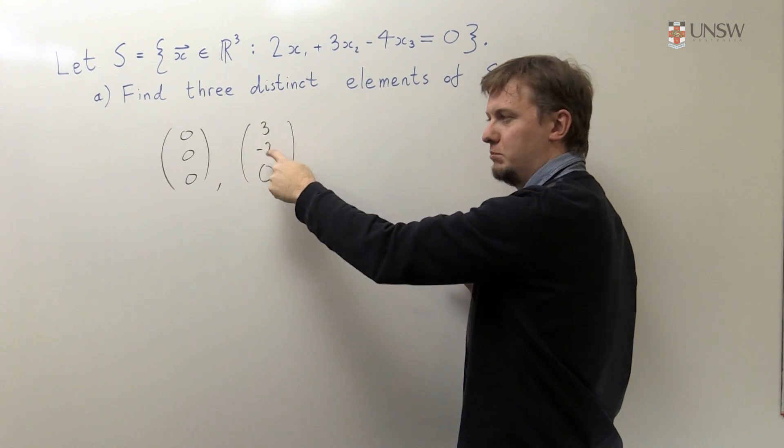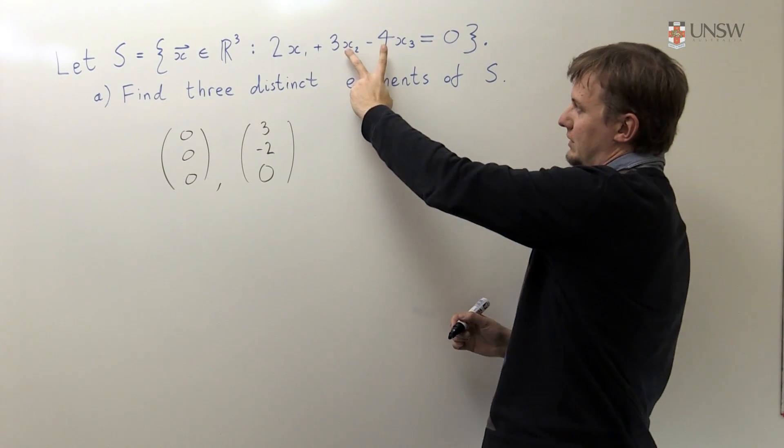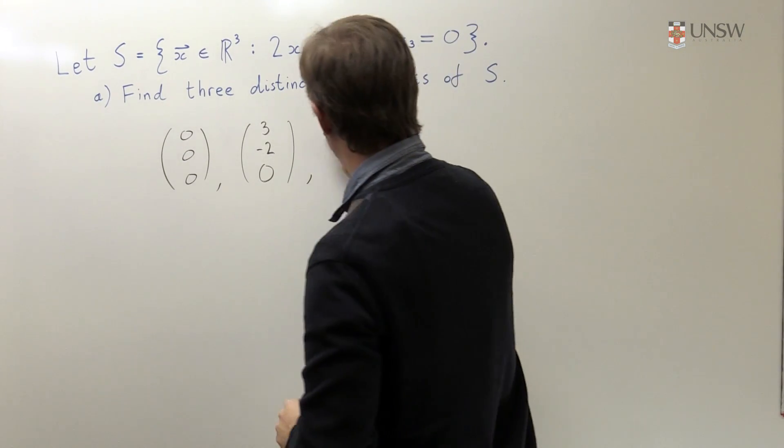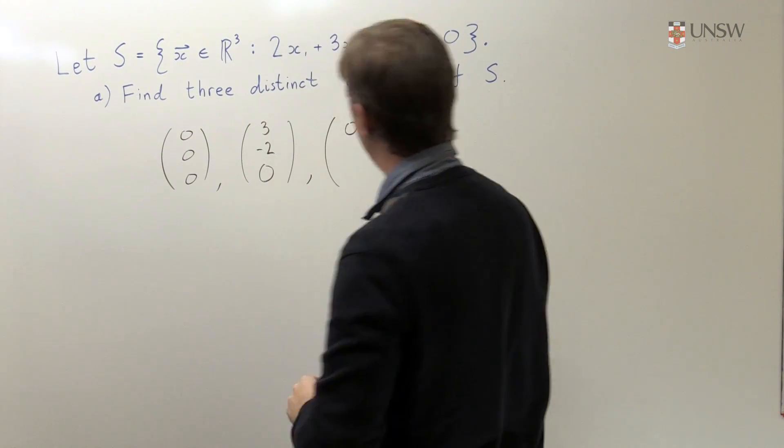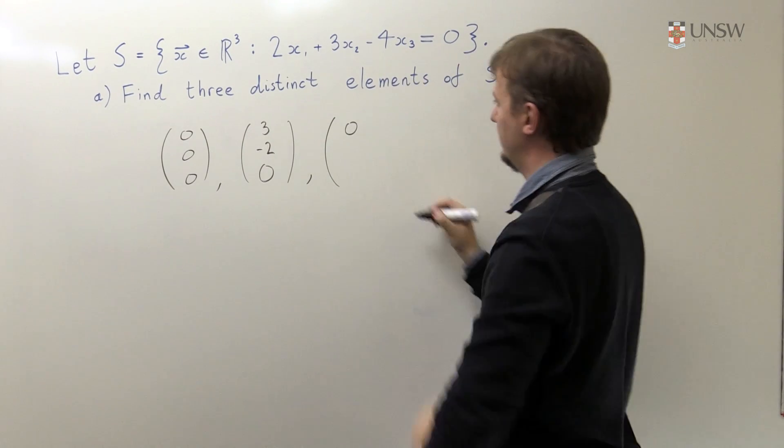So that's a nice example, and we can do the exact same thing with these two terms. So let's say the first component is zero and I'm just going to take a 4 and a 3 to balance that out. And those are three distinct elements of S.